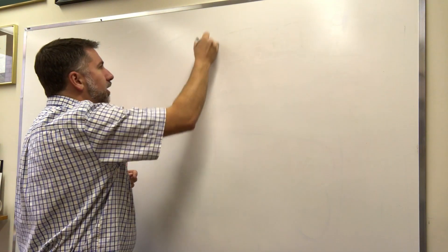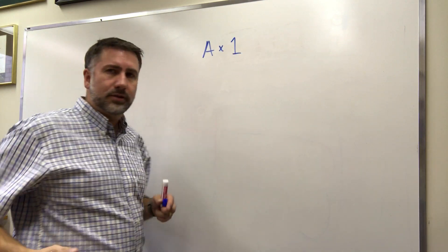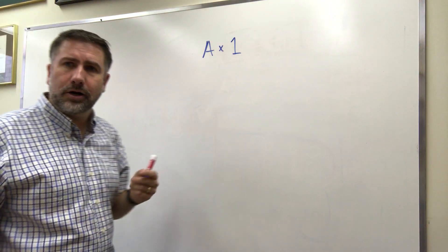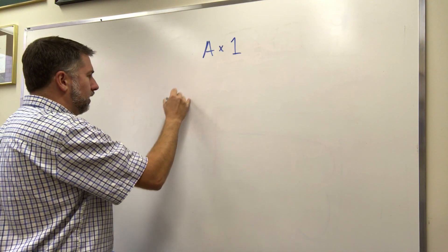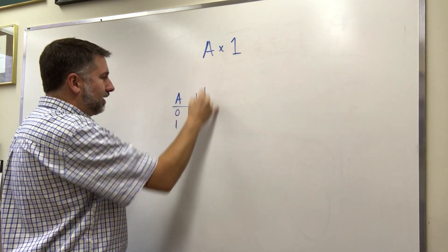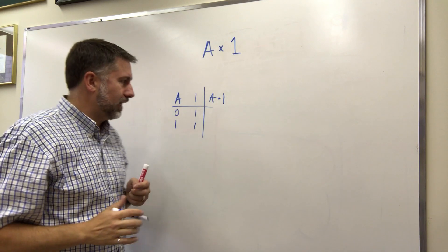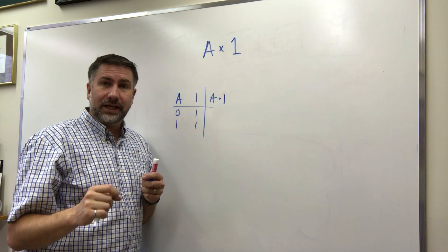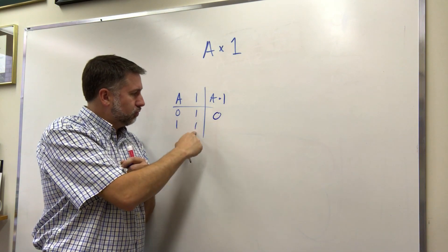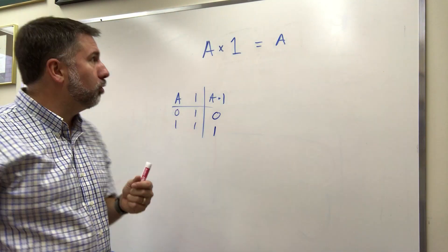For example, if you have a variable and you multiply by one, in regular algebra, you get the variable back again. Let's see what this looks like in our binary algebra. Here's A, and here's 1. And we want to AND these two together. What happens? Well, AND is true only if both are true. So this one is false, this one is true. We get our A back again. Great, that's what we were hoping to do.